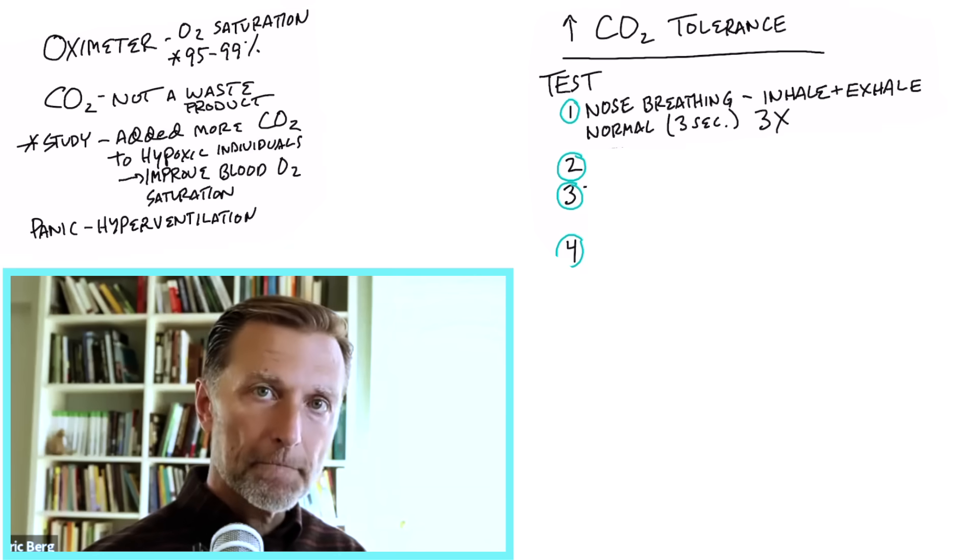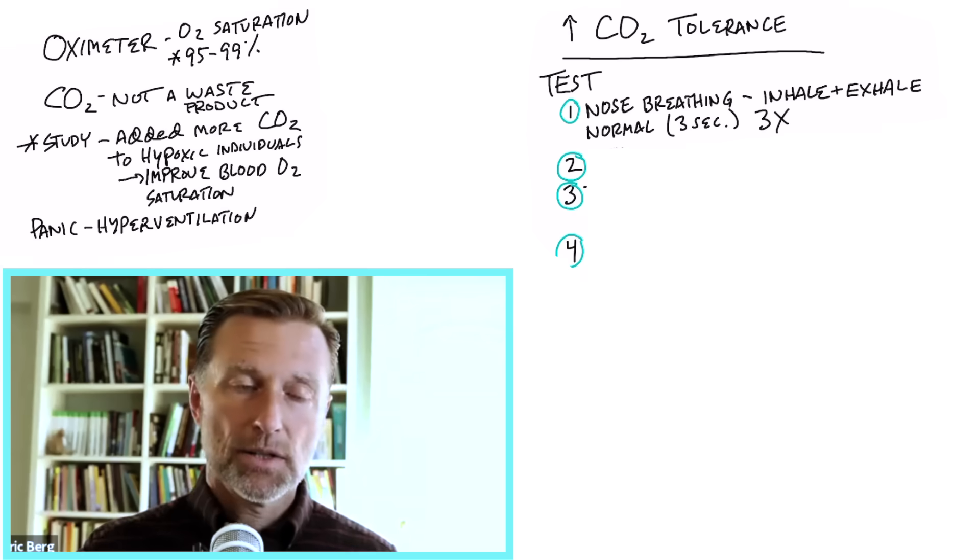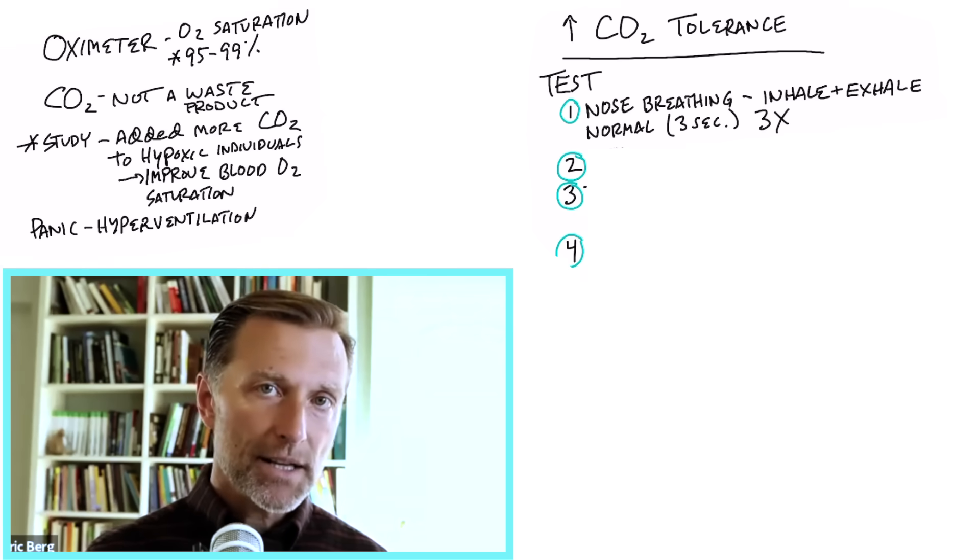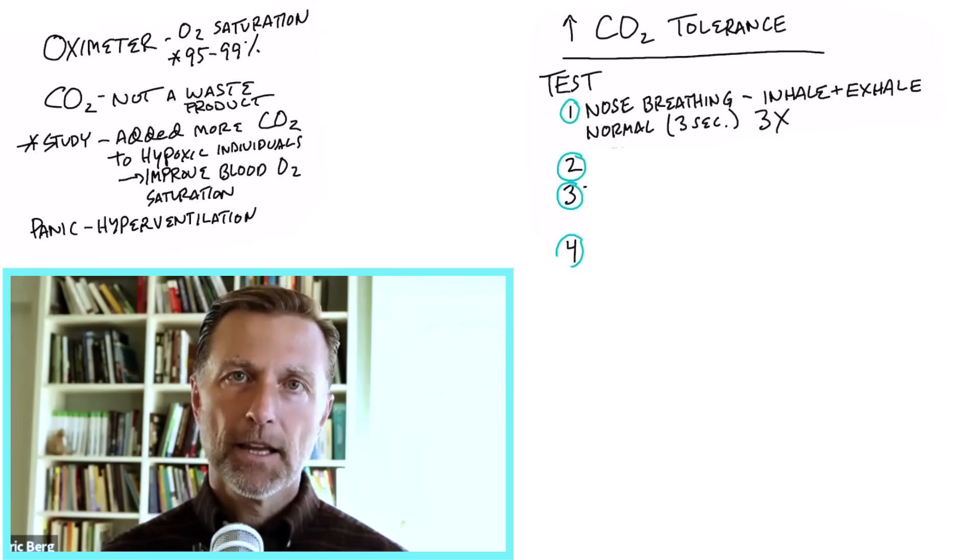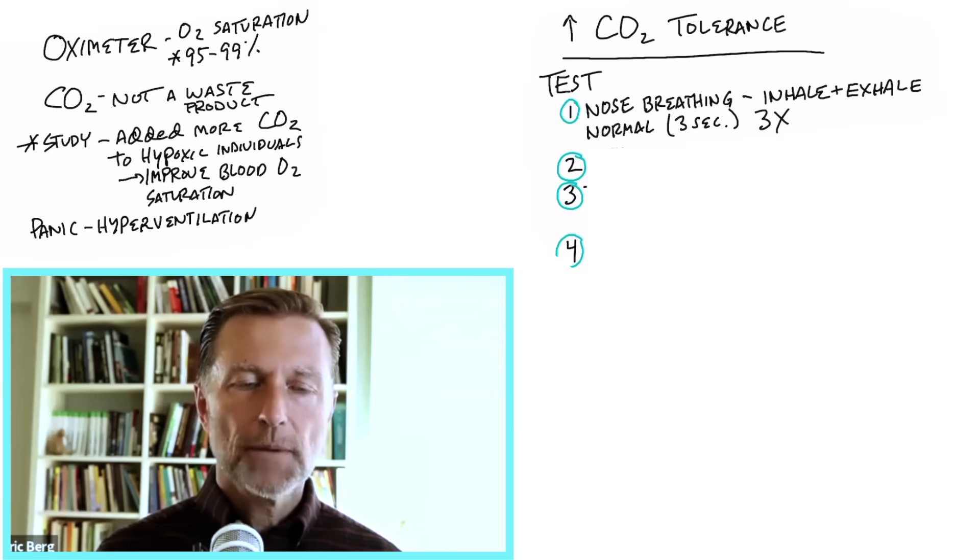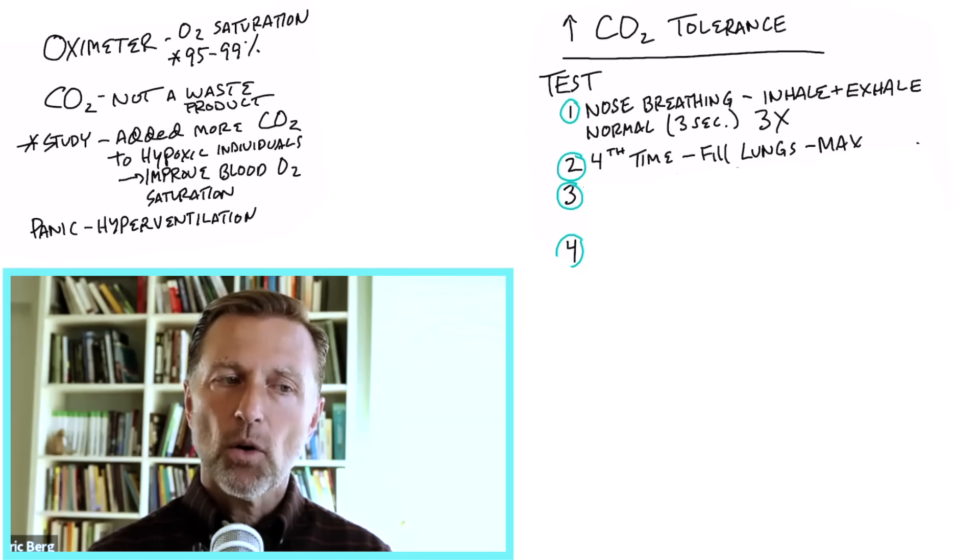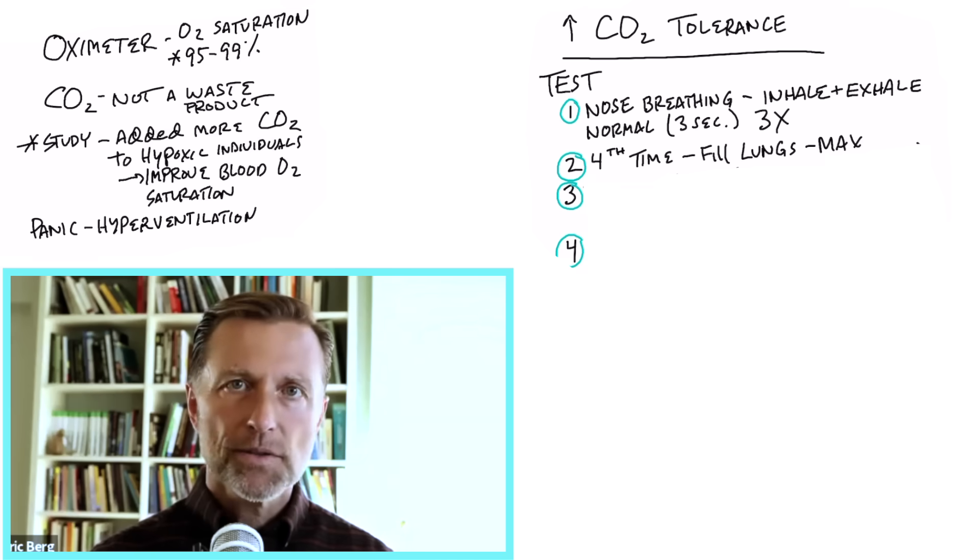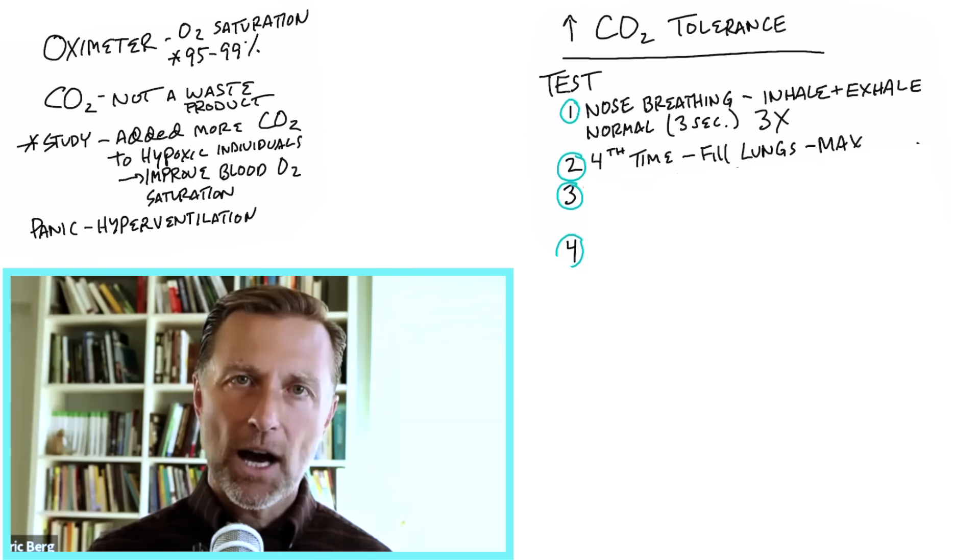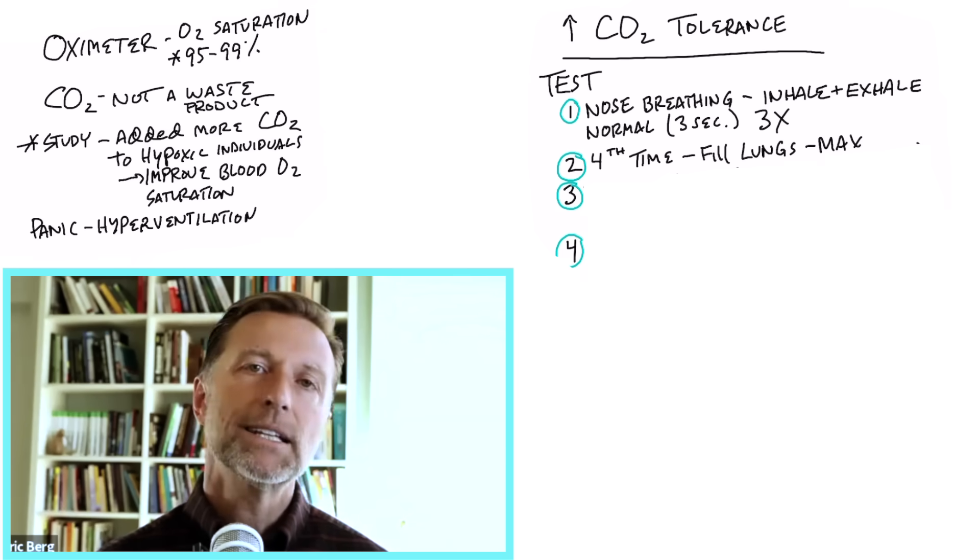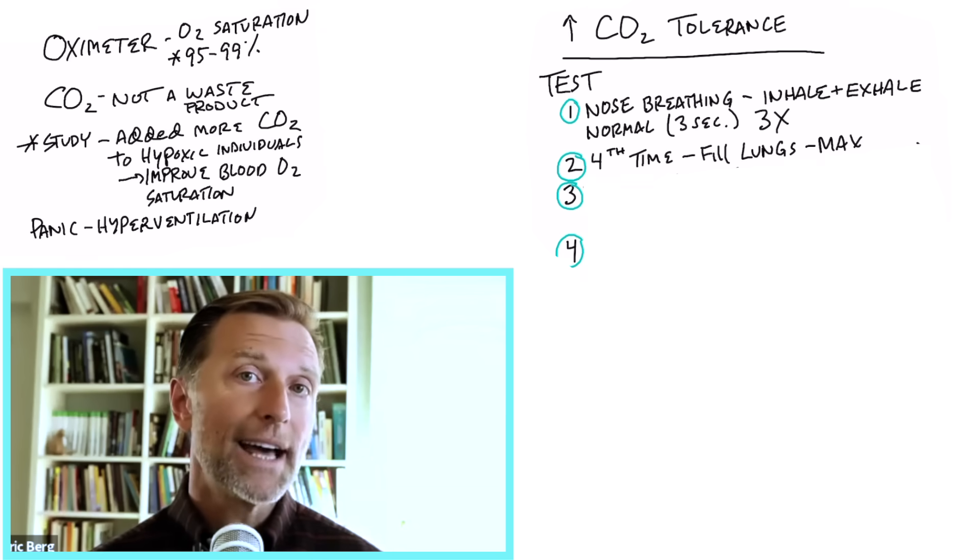Now, on the fourth time, you're going to expand your lungs and breathe in as much as you can. So that fourth inhalation is a very large inhalation. Now, as you time this next phase, you're going to be timing the slow, continuous exhalation of air from that inhalation. And so you're not going to want to hold your breath. You're not going to want to pause. You just want to slowly let the air out. And you're going to time it and see how long that takes. But it has to be slow and continuous. And so you're going to record the time until you run out of air.